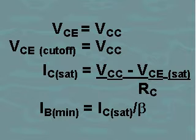When the base-emitter junction is forward biased and enough base current is present to produce maximum collector current, the transistor is saturated. Then, I_C saturation is equal to V_CC minus V_CE saturation, divided by the collector resistance, R_C.